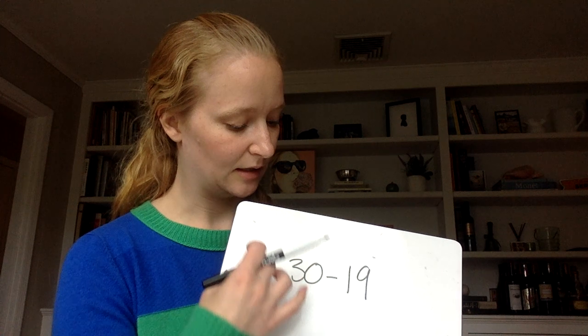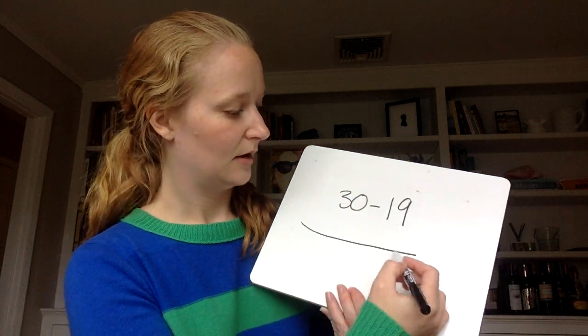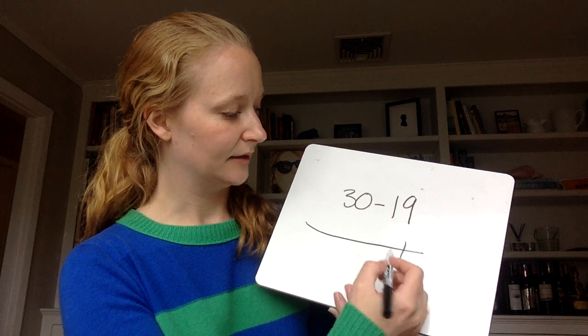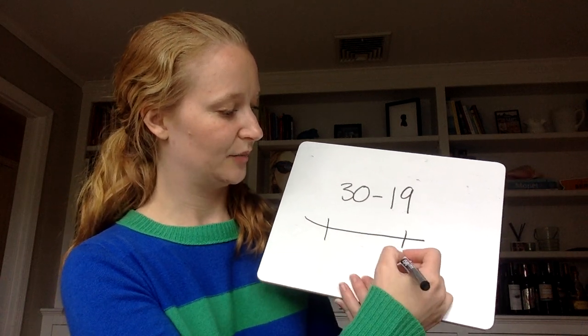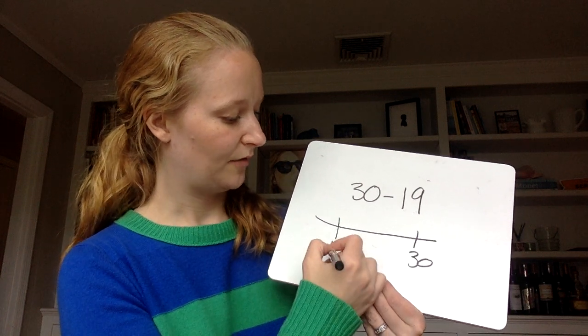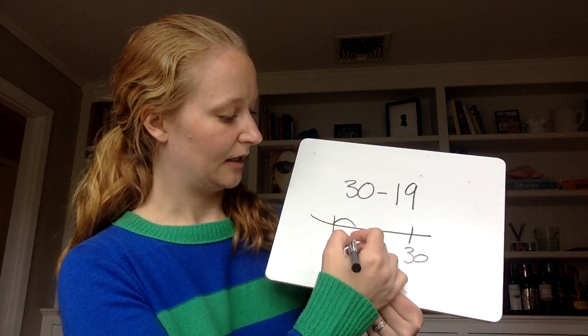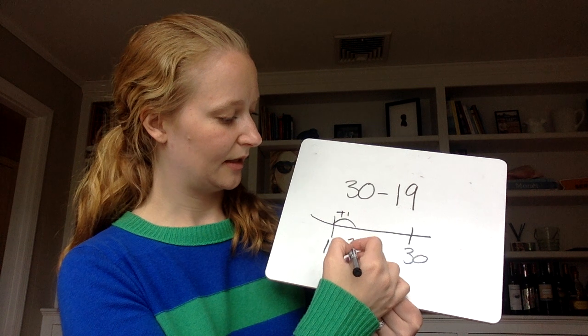I'm looking and this problem to me is quite challenging. 19 isn't so friendly in terms of taking away. But I know that 19, actually I'll start here because I know I'm trying to get up to 30. So if I'm at 19, I can jump up 1 and that gets me to 20.